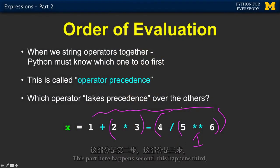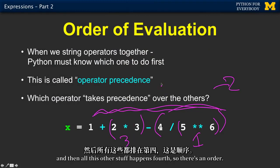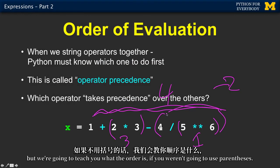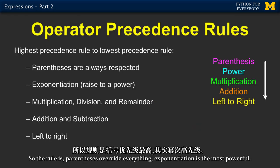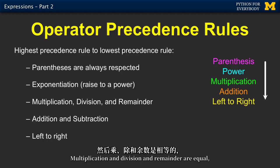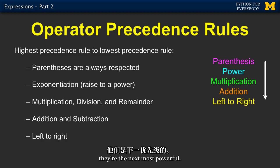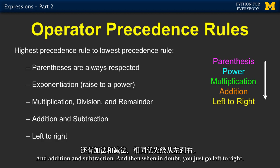Because this happens first, this part here happens second, this happens third, and then all this other stuff happens fourth. So there's an order. But we're going to teach you what the order is if you weren't going to use parentheses. So the rule is parentheses override everything, exponentiation is the most powerful, multiplication and division and remainder are equal. They're the next most powerful in addition and subtraction. And then when in doubt, you just go left to right.